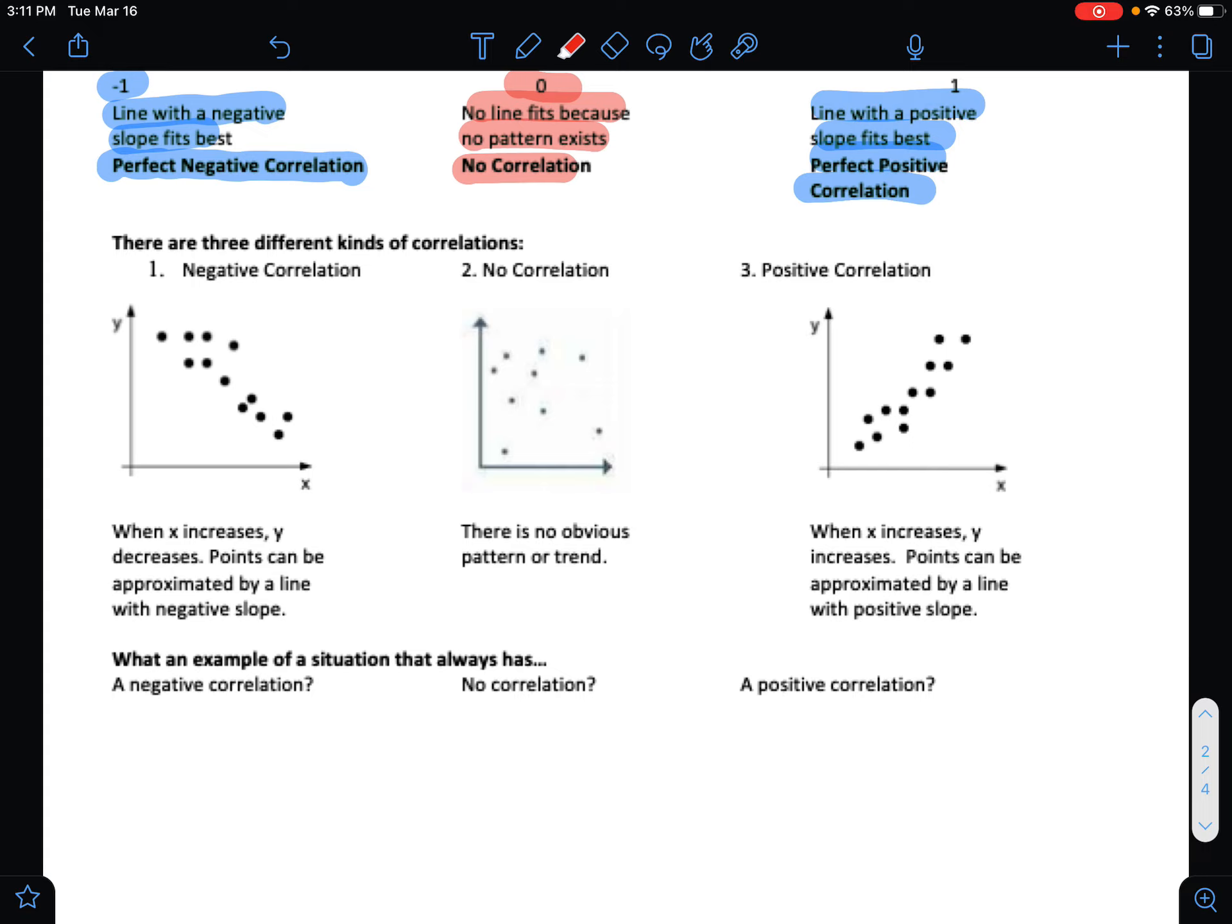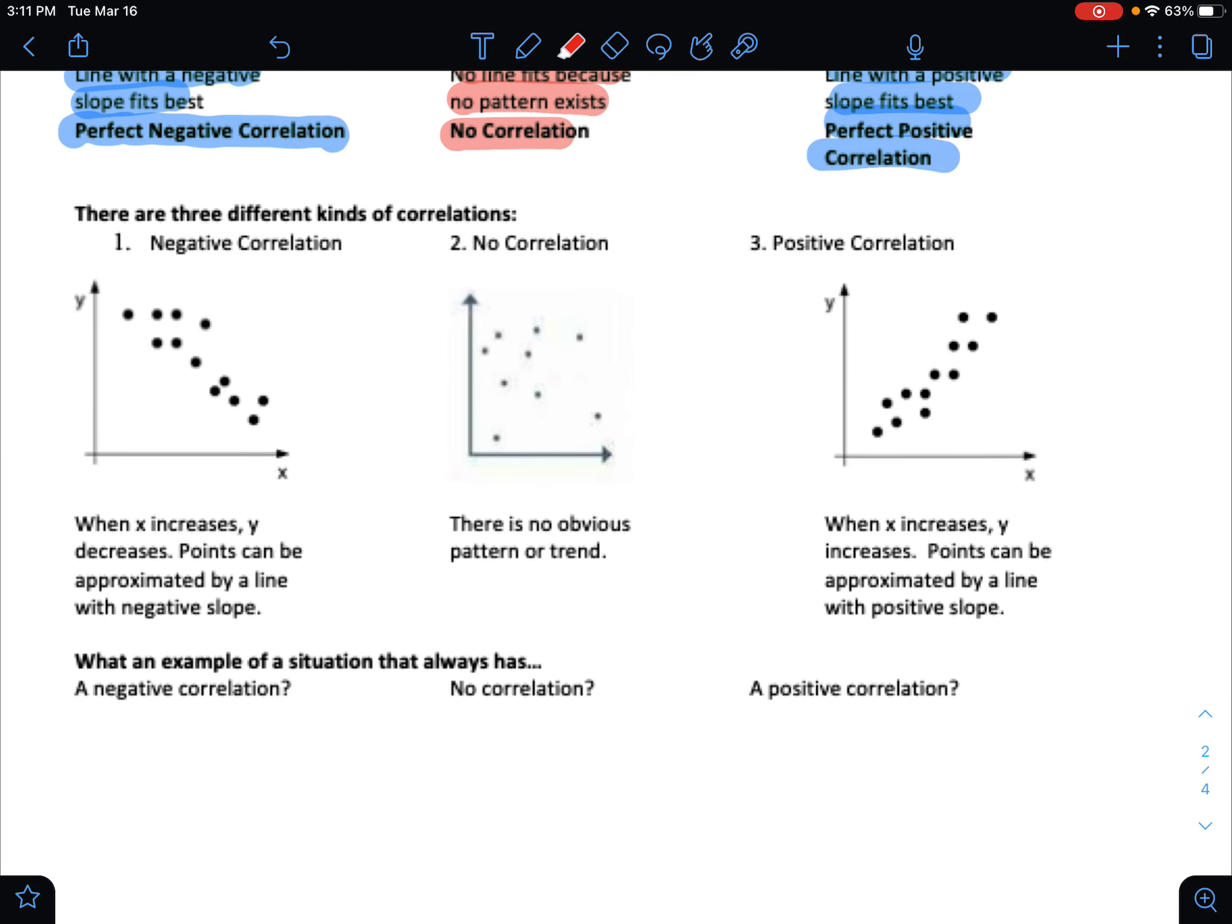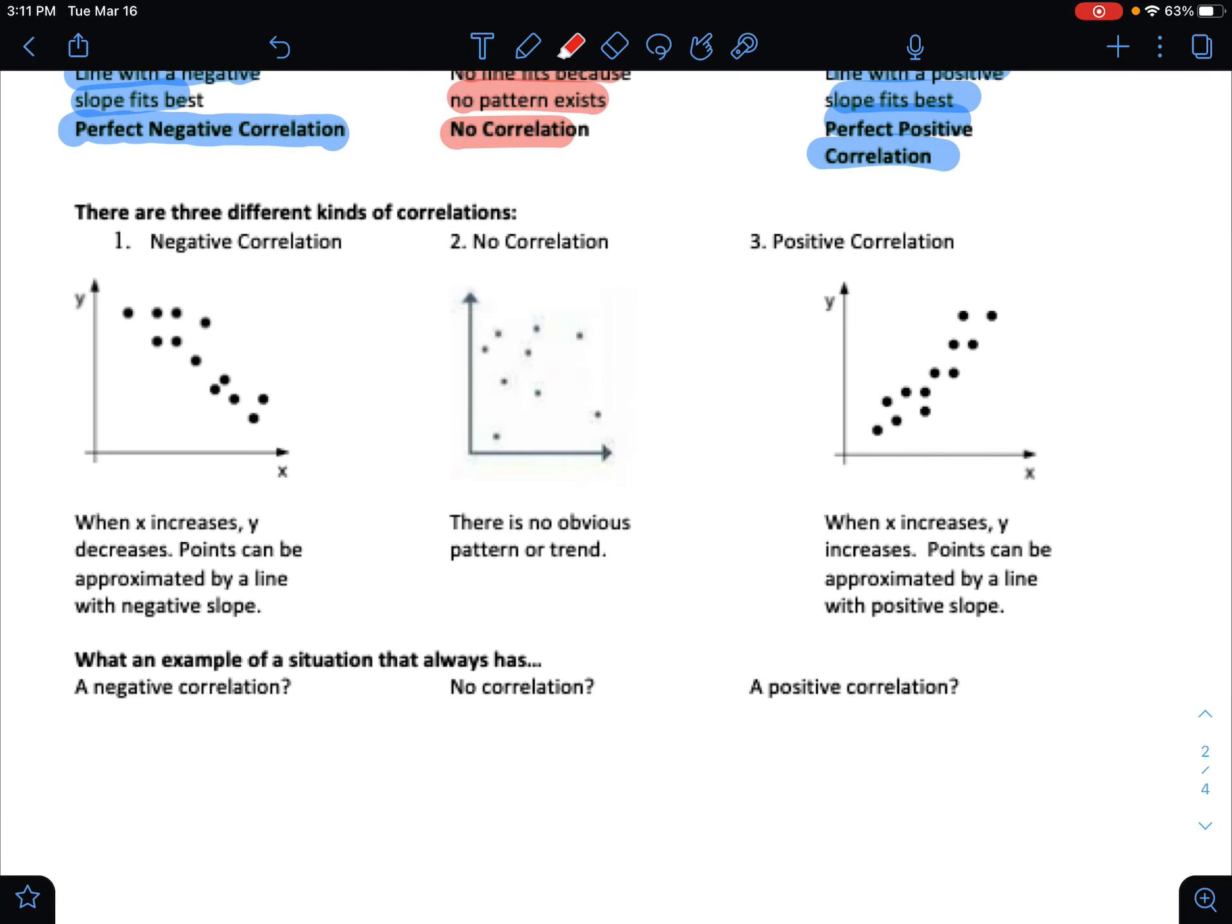Here's an example down below of negative correlation, no correlation, and positive correlation. Now, none of these three graphs are perfectly linear, either in a negative or positive direction.